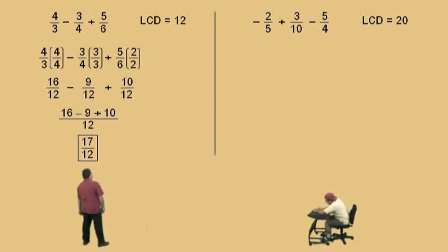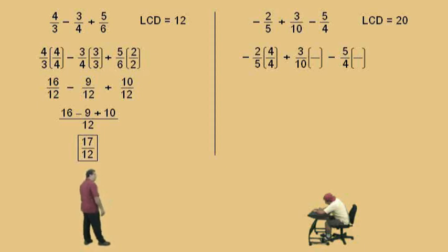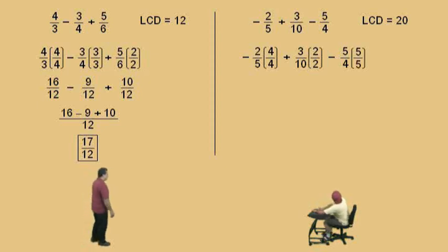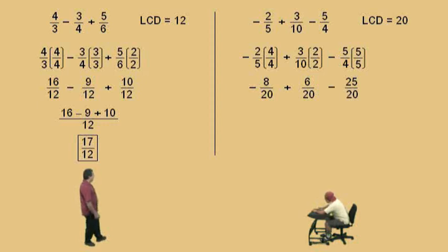Negative two-fifths — multiply top and bottom by four, because five times four is twenty, and that's what we want in our denominator. Three-tenths — top and bottom by two. And the five-fourths — top and bottom by five. Our first fraction comes out to be negative eight over twenty. Three-tenths times two over two is six over twenty. And five-fourths times five over five is twenty-five over twenty. All of our denominators are twenty.